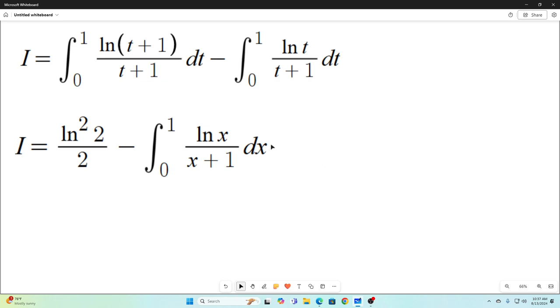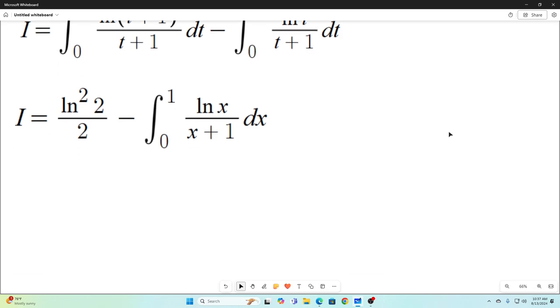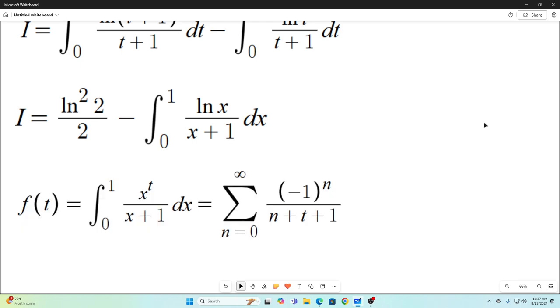Okay. This one is not evaluatable using traditional techniques. So I've actually done this integral on the channel before. It evaluates to negative pi squared over 12. But I'm just going to show how I get that really quick. Let's make a function f of t that's equal to the integral from 0 to 1 of x to the t over x plus 1 dx.